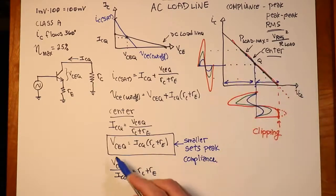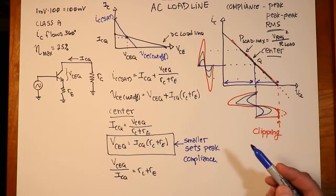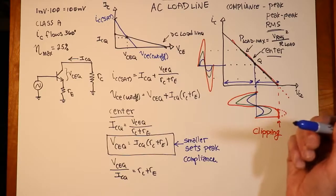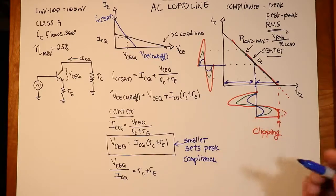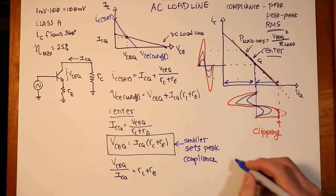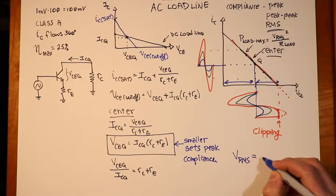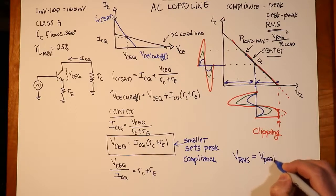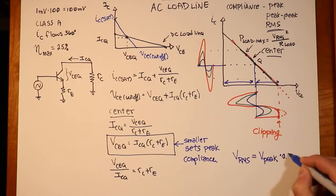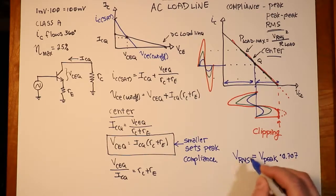So, you can use that as a general operative. Wherever the Q point is, look at this equation, figure out which one is smaller. That's the peak value. You could then use your RMS fudge factor, if you will. V RMS is approximately equal to V peak times 0.707. Remember, that's 1 over the square root of 2, times 0.707. And you can use that value then to calculate your power.